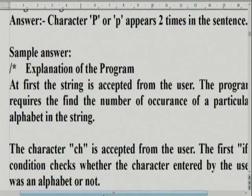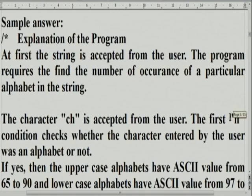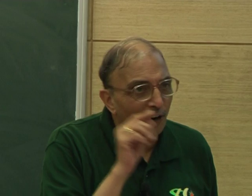The string is accepted from the user. The program requires finding the number of occurrences of a particular alphabet in the string. The character CH is accepted from the user. The first if condition checks whether the character entered by the user is an alphabet or not. Note that this program is not written under examination constraints — it is written later. When you write it for your lab or at home, you think of additional things. For example, instead of an alphabet, somebody gives you a less-than sign and asks you to check whether it is in a sentence. In any English sentence, will you find a less-than sign?